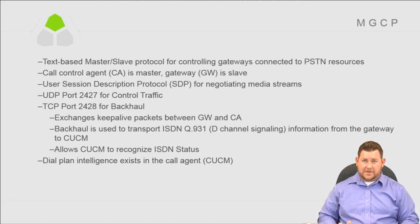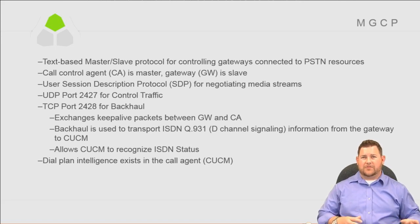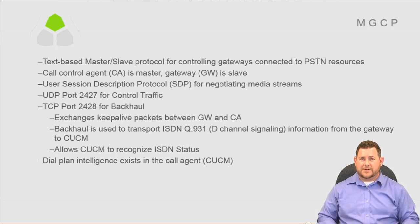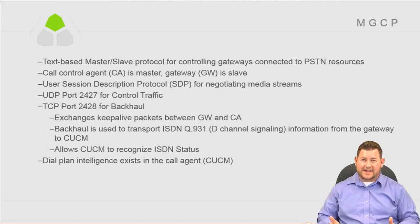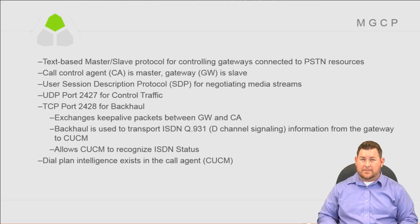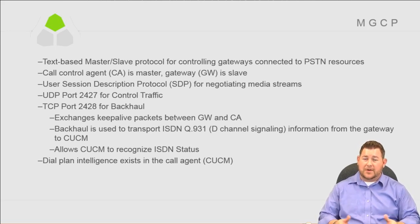Since it's a master-slave protocol, the master has all the intelligence — all the dial plan, route patterns, digit manipulation, everything is done in CUCM. This is especially good for customers who don't want multiple areas of control for digit manipulation or configuration. MGCP is less configuration than having dial plans on both CUCM and through an H.323 gateway.